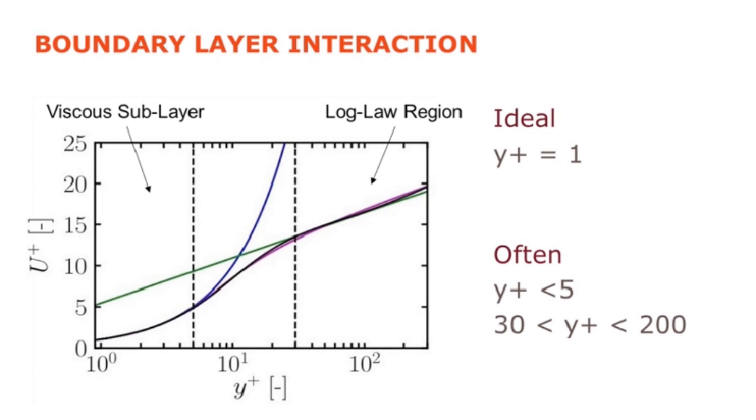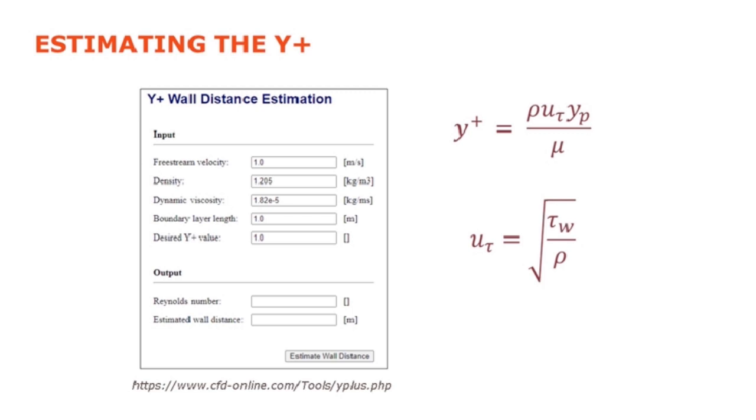We may still be able to achieve a converged solution where our y-plus value lies outside this range. However, we want to ensure that the solution we compute is accurate and follows real life. And to do this, we should place some stringent restrictions on the y-plus value that we target when we go for our CFD simulation.